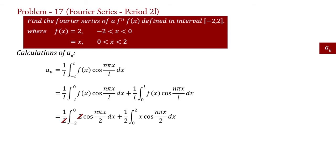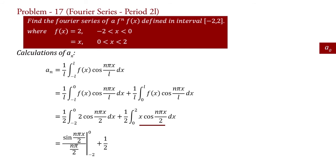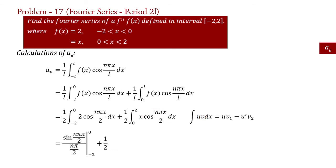Integrating the first part gives the integral of cos(n pi x upon 2) dx. For the second integral, we apply the formula of integration by parts: integral u v dx equal to u v1 minus u-dash v2. If we compare this integral with this formula, then here u equal to x and v equal to cos(n pi x upon 2). So by applying this formula, we write x into v1, that is the integration of v.